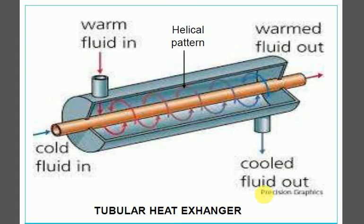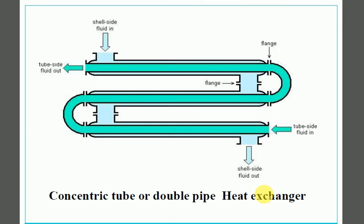The concentric tube or double pipe heat exchanger is similar. The only difference is pipes are arranged in double form. Baffles are arranged in between so that fluid moves in circular motion. Inside the pipe is your desired liquid, and outside is the warmer fluid. From one side you put cold fluid and from the other side it comes out hot.